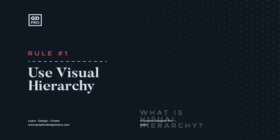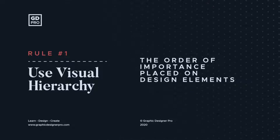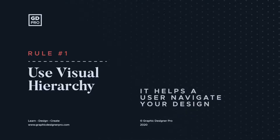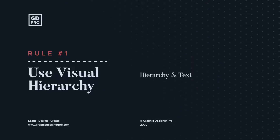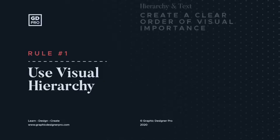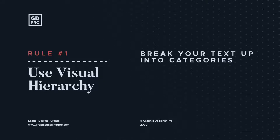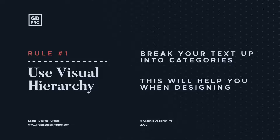Jumping straight into our first rule for better typography, and that is to use visual hierarchy. Now what is visual hierarchy? Well simply put, it's the order of importance placed on elements within your design, and done properly will help your audience use and navigate your work. With text specifically, you want to make sure there is a clear order of importance placed on it. Taking the time to break your content up into different categories can really help you organise and format it correctly.